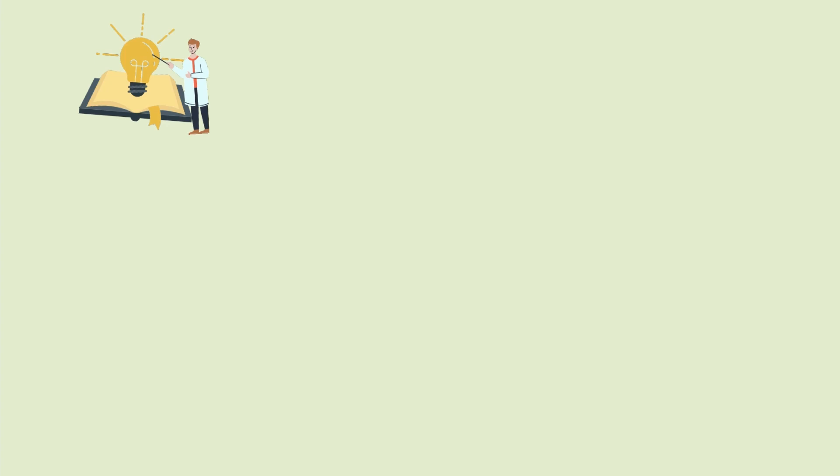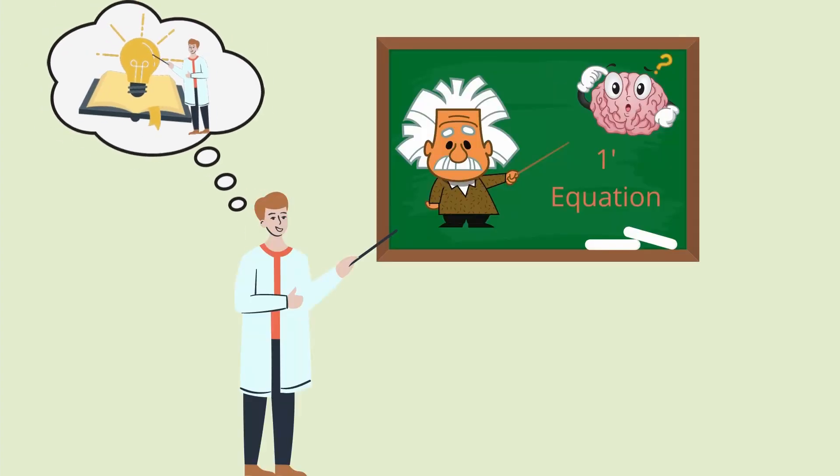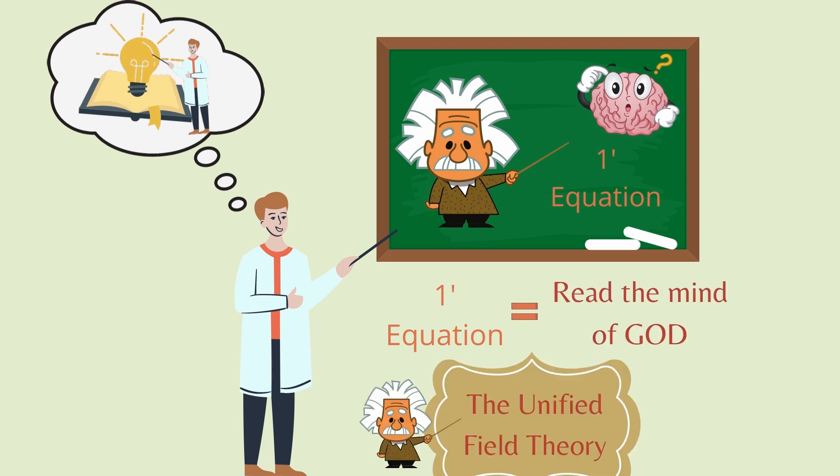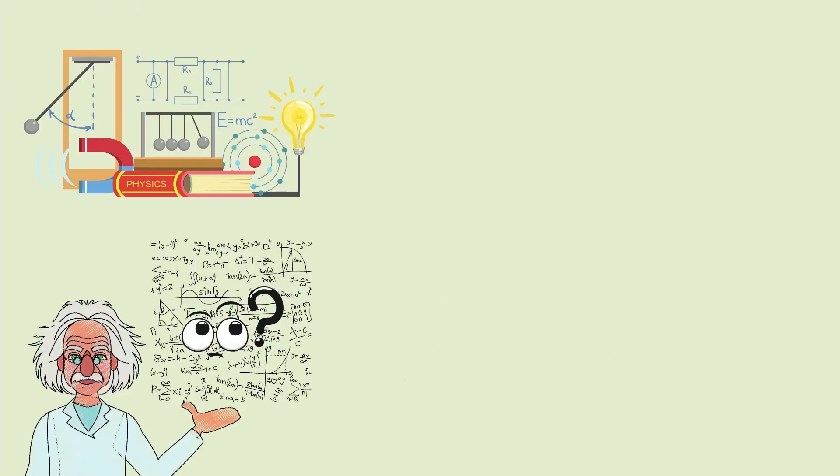In this book, Dr. Michio Kaku explained Einstein's dream of how Einstein wanted to create a one-inch-long equation that would allow him, in his words, to read the mind of God. Einstein called it the unified field theory. What could be so hard in the equation that even Einstein could not solve it?